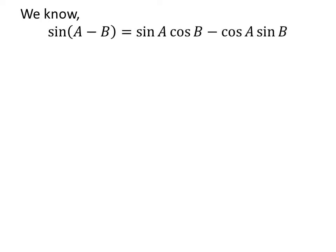As we know, the trigonometry identity sine of a minus b is equal to sine of a times cosine of b minus cosine of a times sine of b.